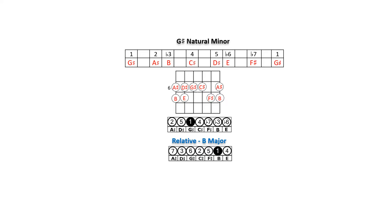Now let's try the G sharp minor scale. A major second from G sharp is A sharp. We must count up in fourths until we get to F sharp. The five sharps in this scale are A sharp, D sharp, G sharp, C sharp, and F sharp. A half step from A sharp is B, the root of the relative major scale.